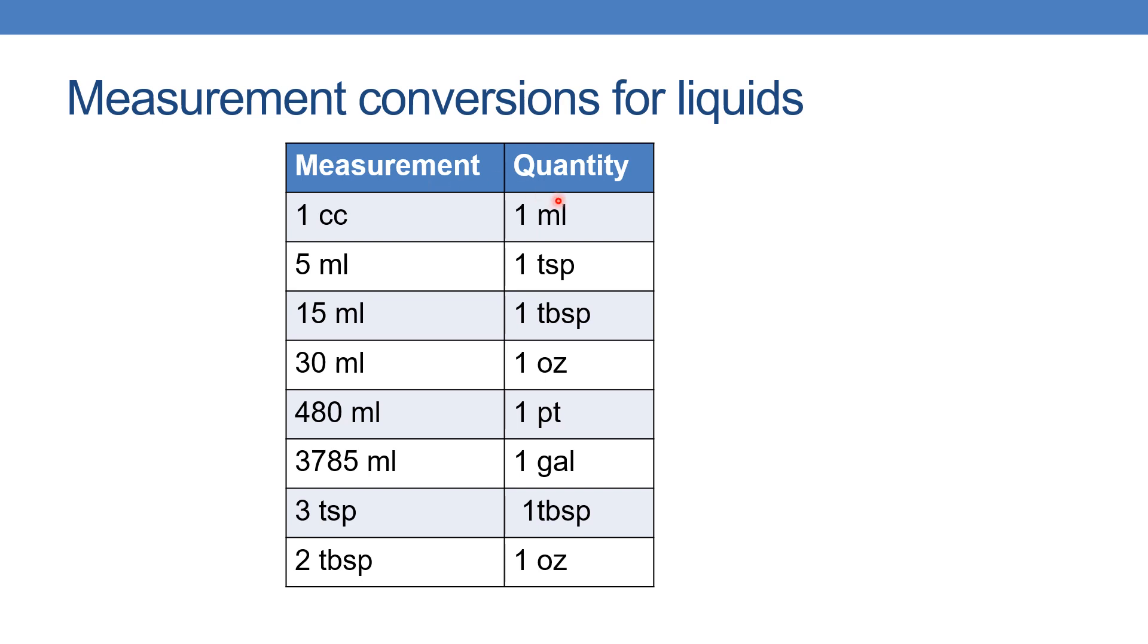1cc means 1 ml and 5 ml means 1 teaspoon. 15 ml means 1 tablespoon. Tsp means teaspoon, Tbsp means tablespoon. 30 ml means 1 ounce and 480 ml means 1 pint.